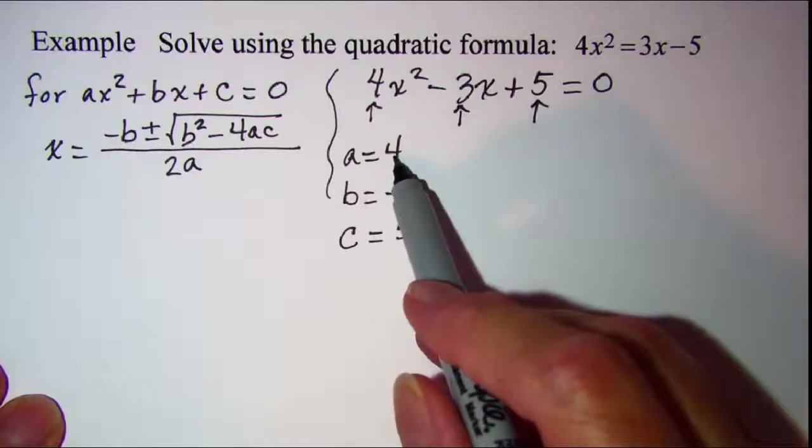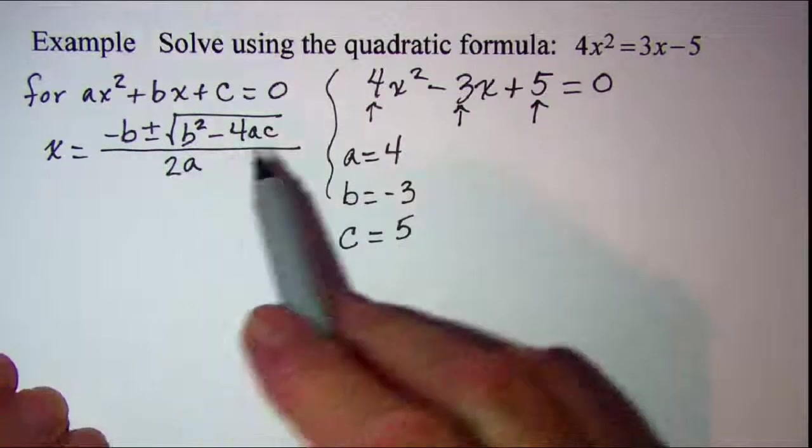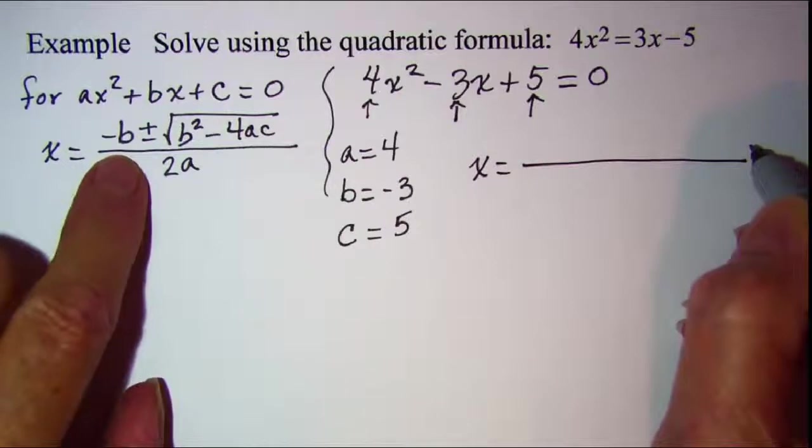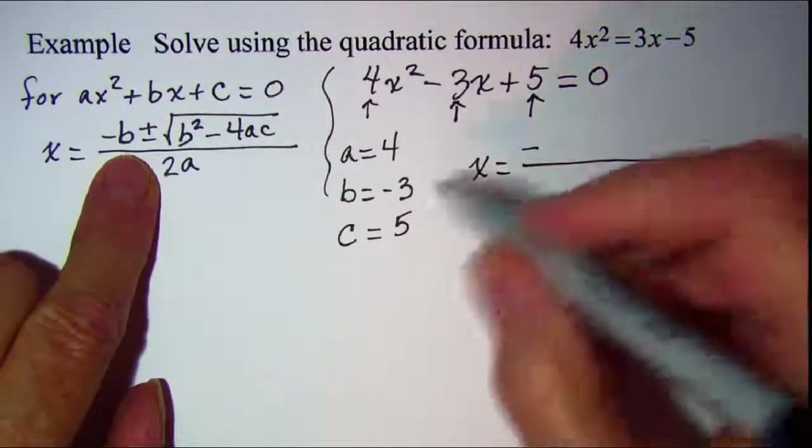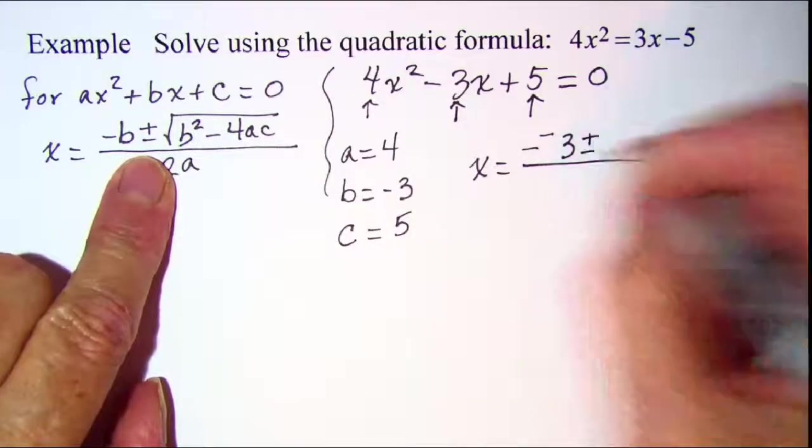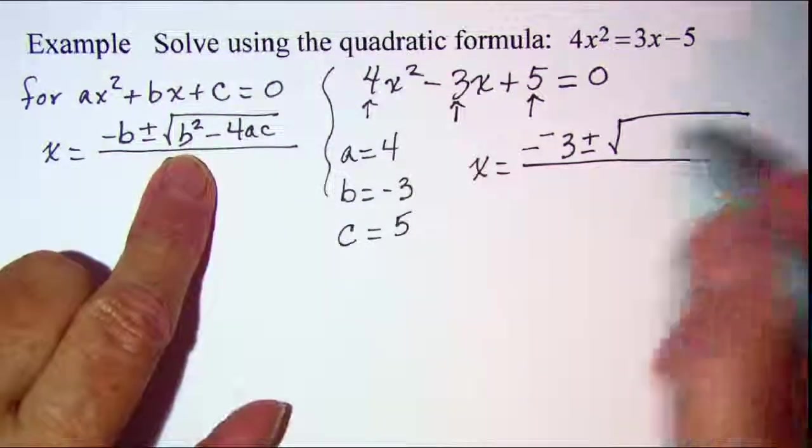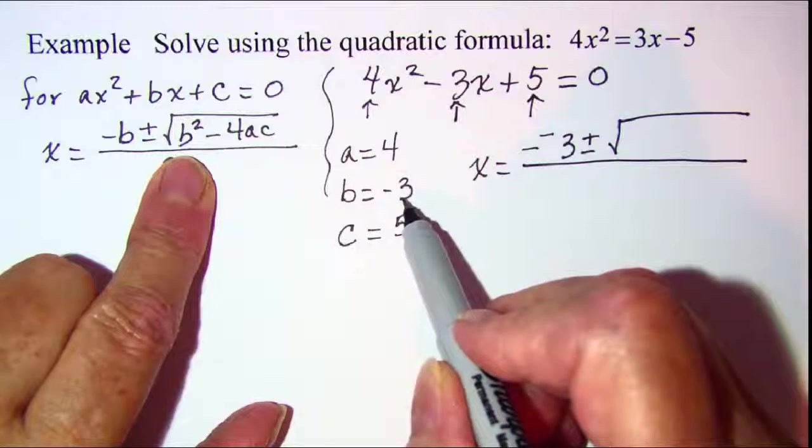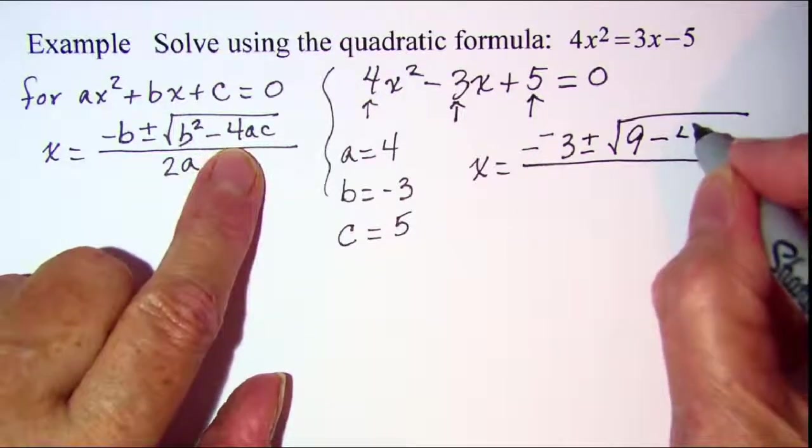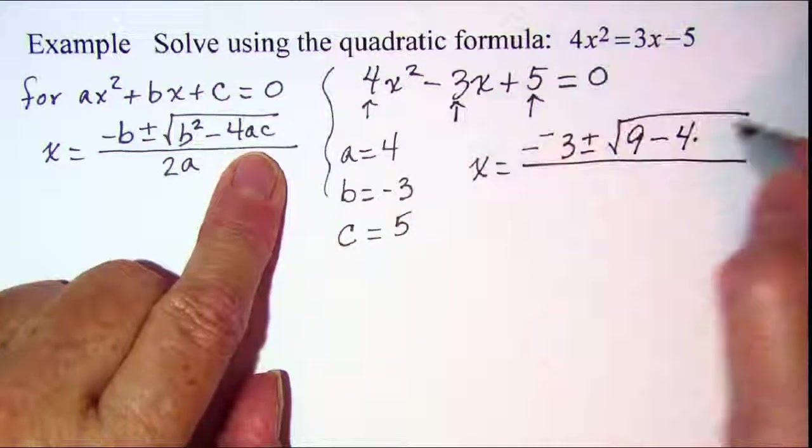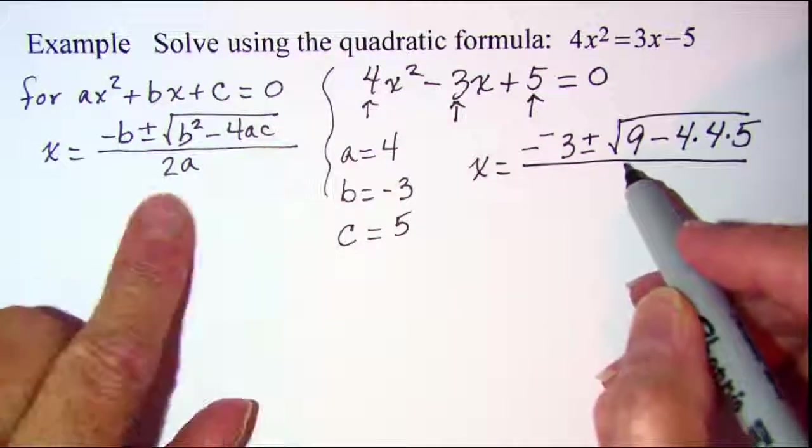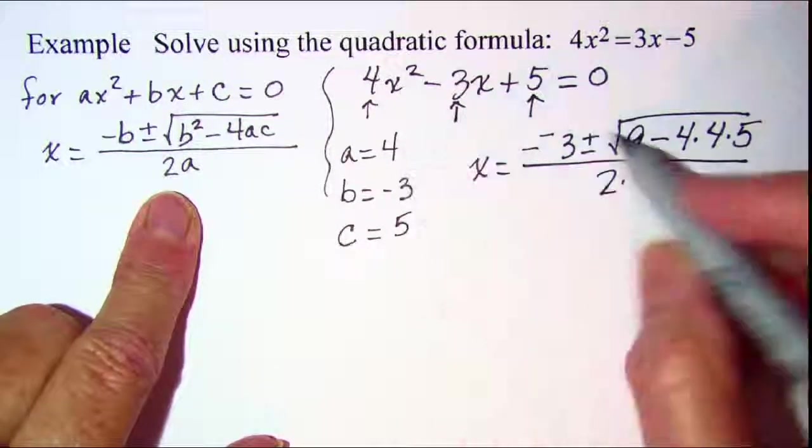Now I'm just going to substitute these values into my formula. So x is equal to negative b, which is negative 3, plus or minus the square root of b squared. So since b is negative 3, we know that negative 3 squared is 9, minus 4 times a, which is 4, times c, which is 5, all over 2 times a, which is 4.